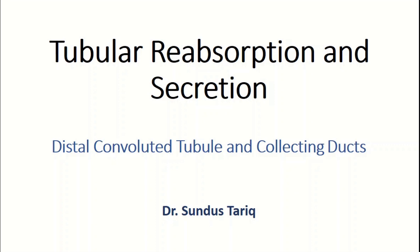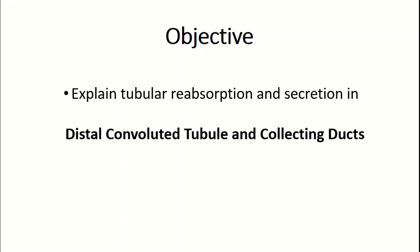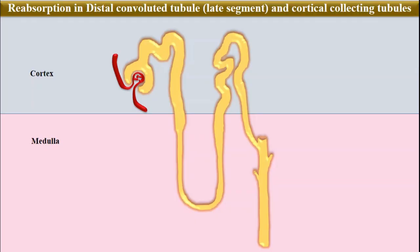Tubular reabsorption and secretion in distal convoluted tubule and collecting ducts. We have already discussed the reabsorption in the principal cells of the distal convoluted tubule and collecting duct. In this particular video, we will focus on the intercalated cells of these segments of the nephron and how they play a part in the acid-base regulation of the body.